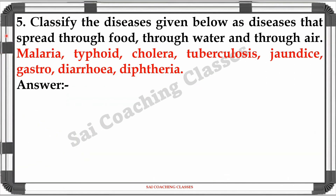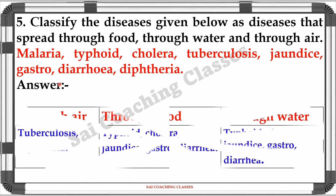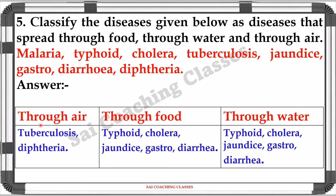Question 5: Classify the diseases given below as diseases that spread through food, through water, and through air. Answer — Through air: Tuberculosis. Through food: Typhoid, Cholera, Jaundice, Gastroenteritis. Through water: Typhoid, Cholera, Jaundice, Gastroenteritis.